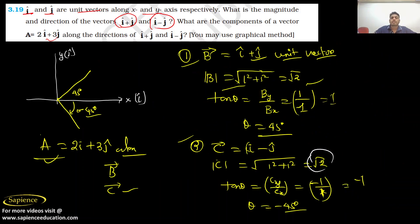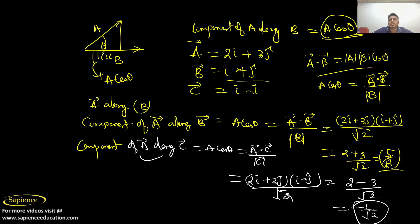So the component of vector A along i+j, which we considered as vector B, and along i-j, which we considered as vector C, has been found using this dot product method. I hope you all have understood. Thank you everyone for watching my video.